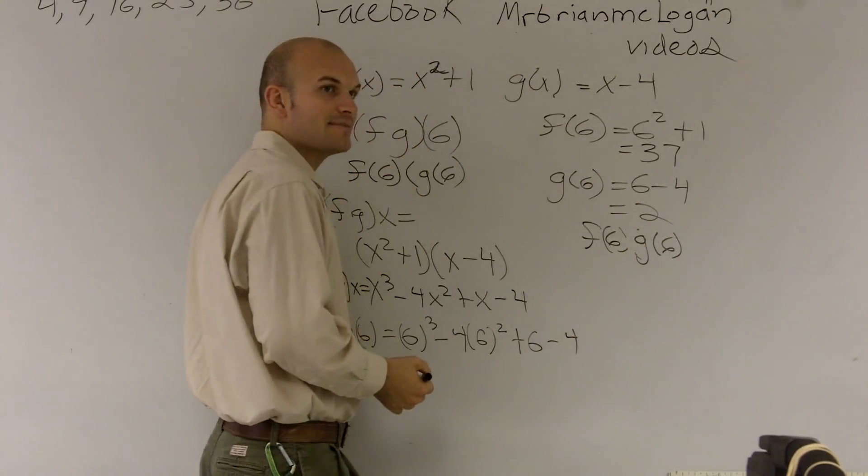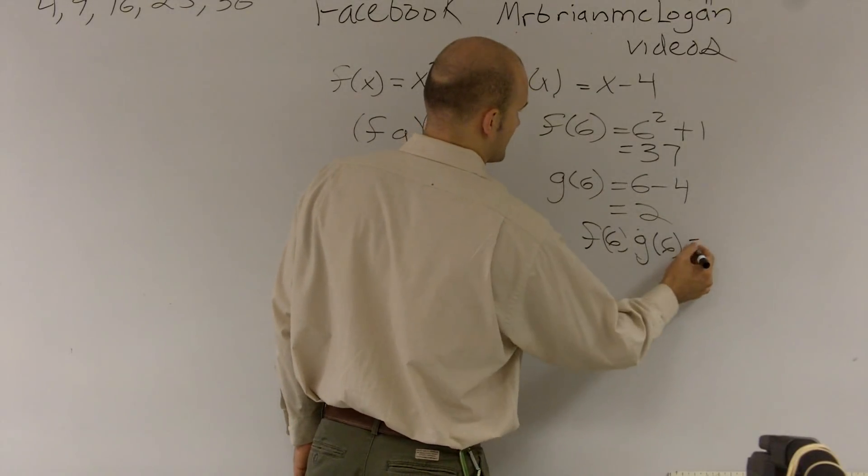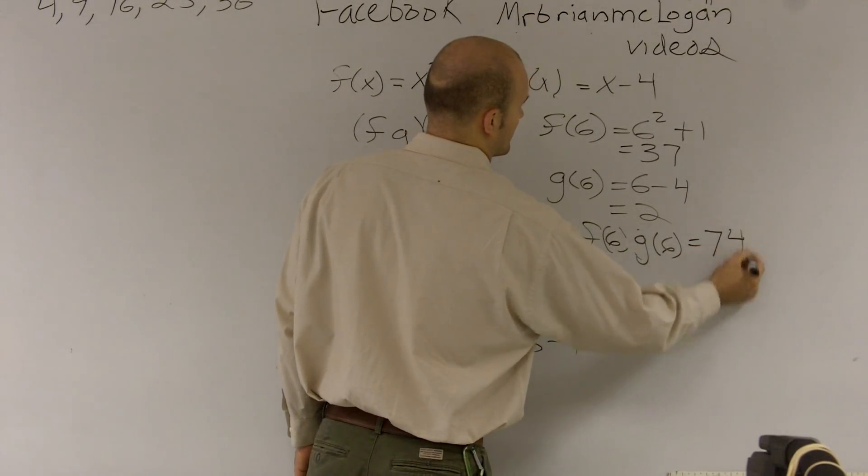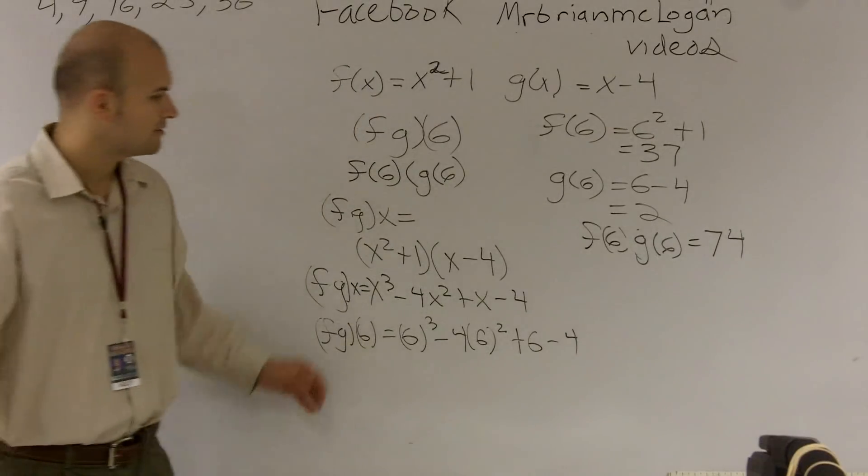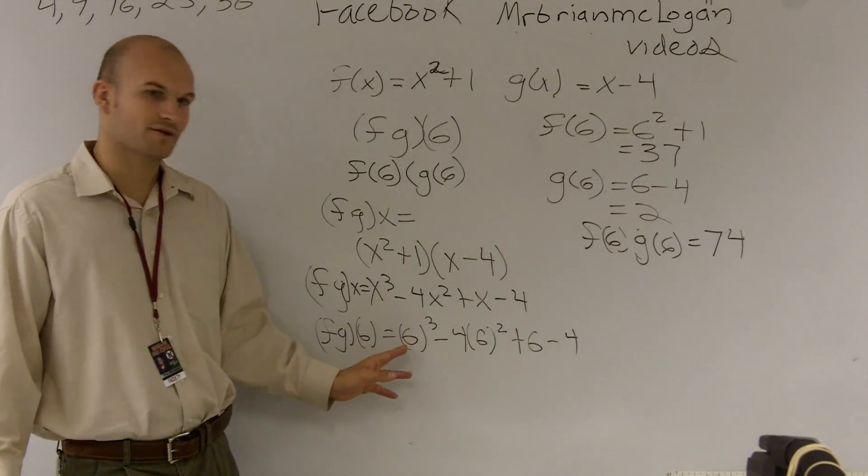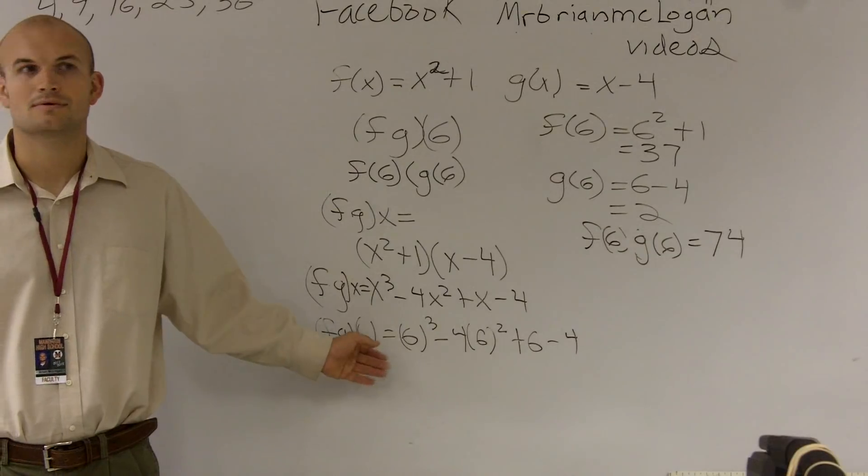Times g of 6. So that's going to be 37 times 2, which is going to be, what, 74? Now, let's take a look at this. 6 cubed, anybody have this? Equal 74.